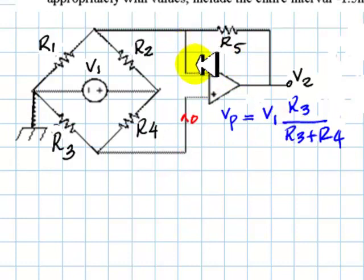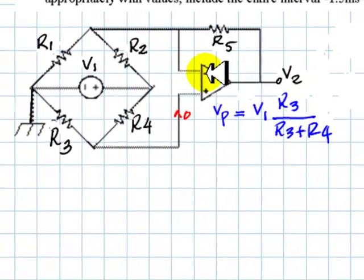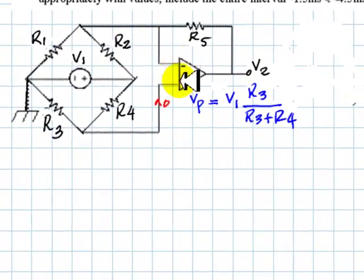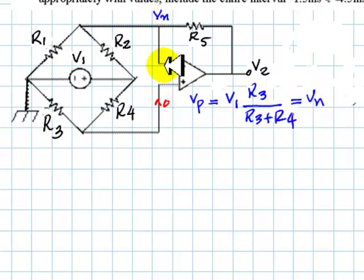Because there is negative feedback up here, the voltage of the inverting node is going to be the same as Vp. So this one here, Vn, is going to be exactly the same value as Vp. We know that because there is negative feedback.